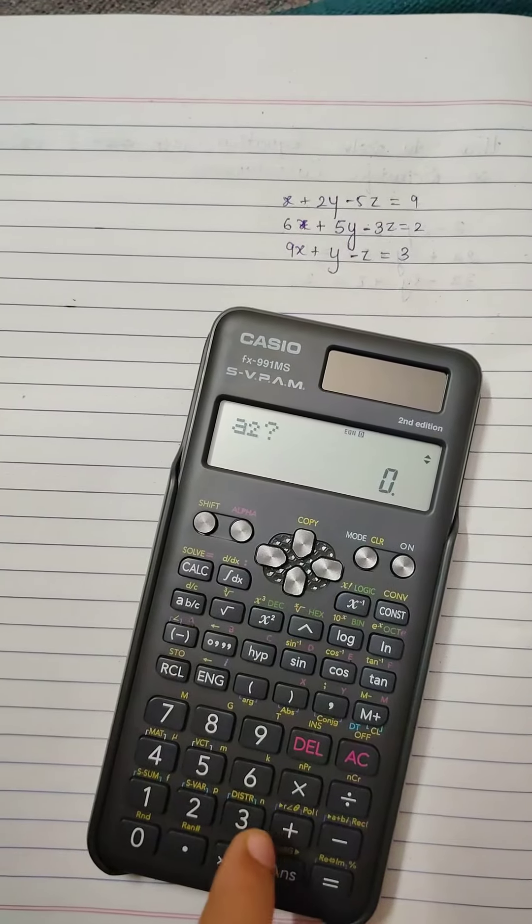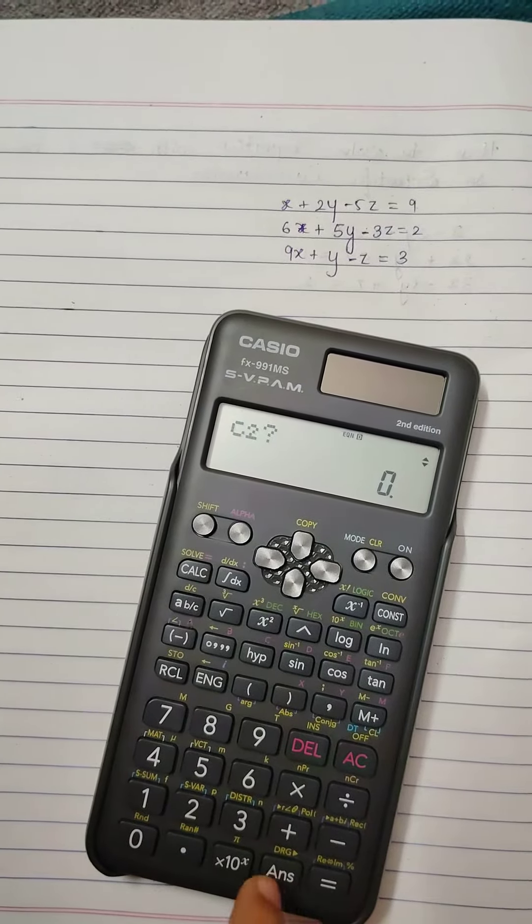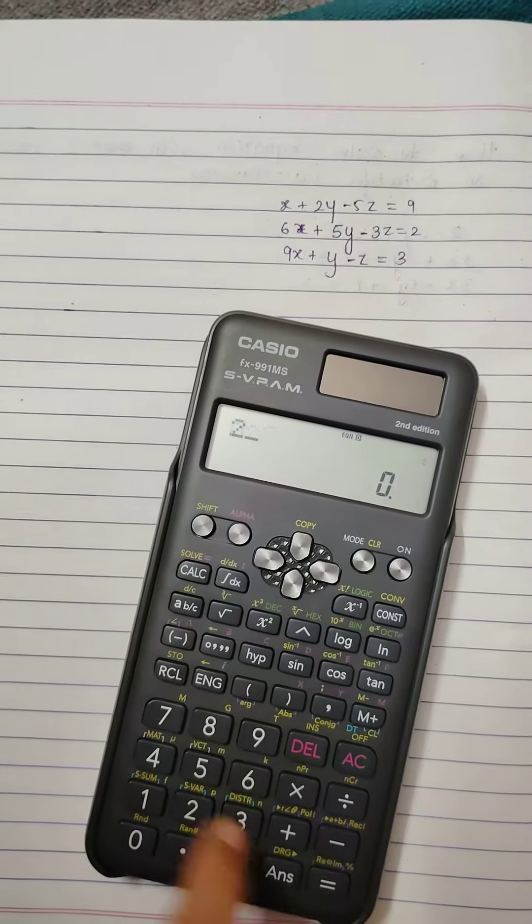And for the second equation: 6, 5, minus 3, 2.